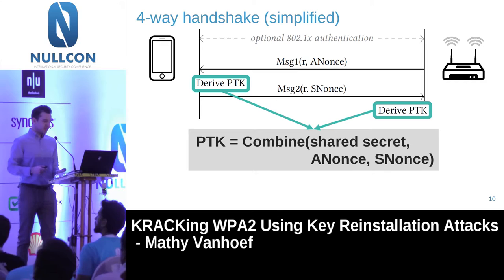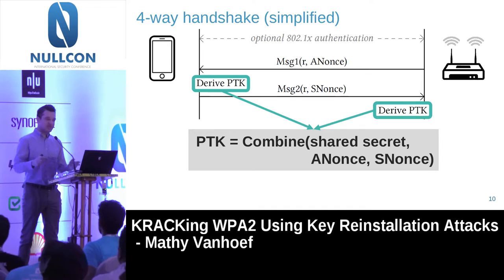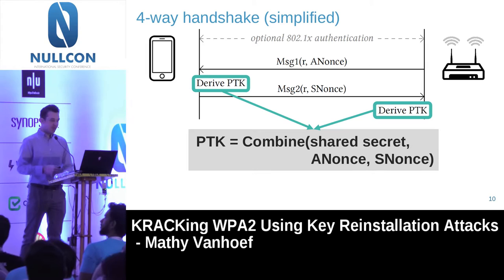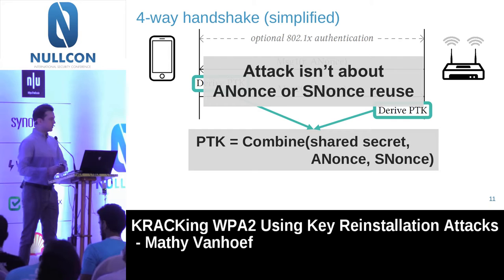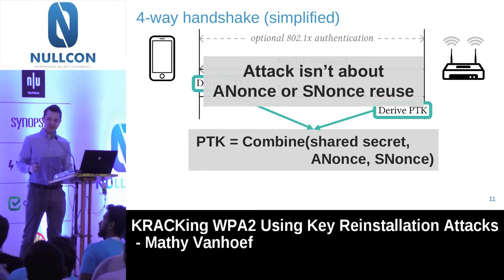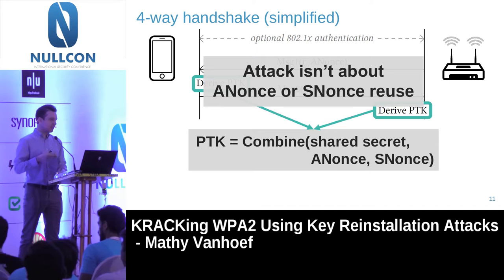Once both devices have these random numbers, they are combined with the shared secret between both devices. The result is the session key — the PTK — that the four-way handshake negotiated, which will be used to decrypt frames afterwards. One clarification: as the title of the presentation mentions, the attack involves nonce reuse. However, we are not going to reuse values for the anonce or the snonce — we assume those are generated properly. The nonce reuse we're referring to will occur during the encryption protocol. So here we assume the anonce and snonce are perfectly random.